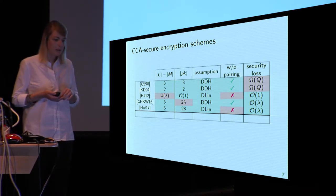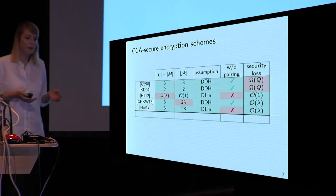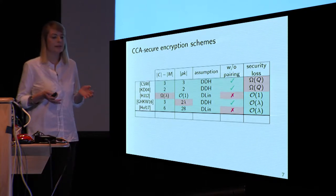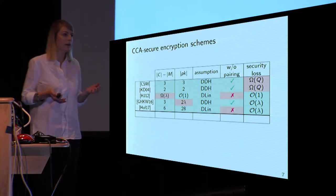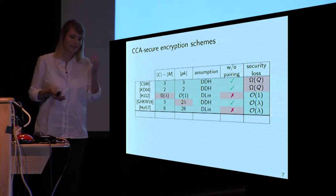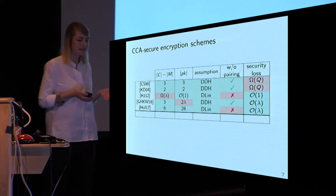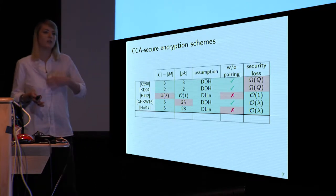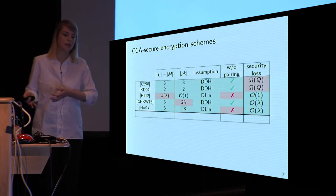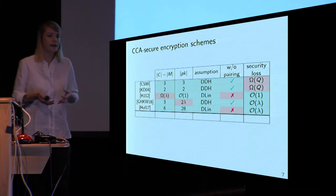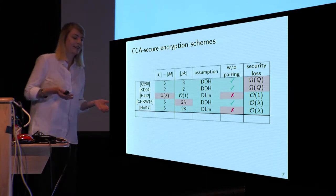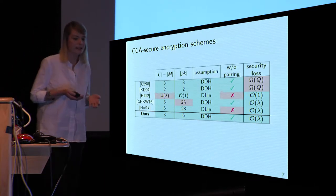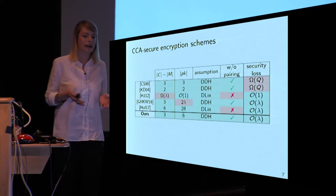In 2016, Gay, Hofheinz, Kiltz, and Wee improved greatly on this bound. They have a very short ciphertext of only three elements, but still suffer from a large public key — around 200 group elements for 128-bit security. Then just from this year, Hofheinz had a work with compact ciphertext and compact public key, but it required pairings — also a source of inefficiency. So the question was: can we do better, can we have it all? And the answer is yes — that's why I'm standing here. We got a ciphertext size of three elements, a public key of six elements, a tight security reduction to DDH, and we don't require pairings.